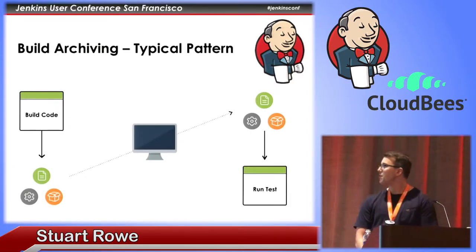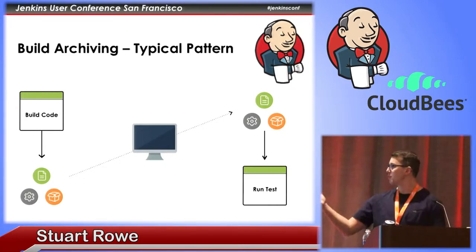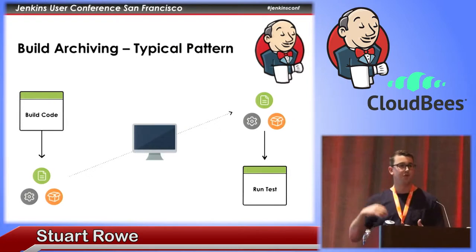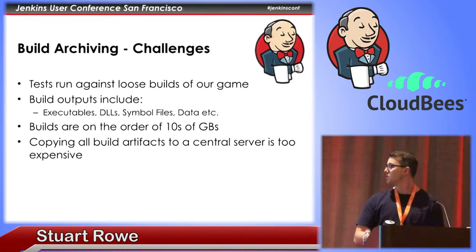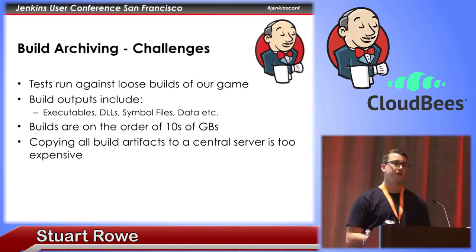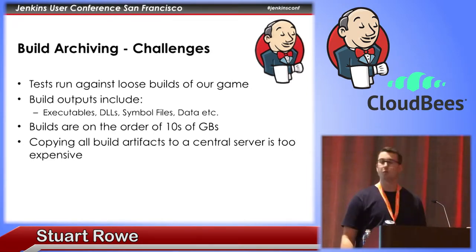In my experience with Jenkins, there is a typical workflow pattern for archiving builds where a build project produces some build output, that output is artifacted and archived on a master server, and then when a test project needs to consume that build output, it copies that artifact from the master into its own local workspace and then runs the test. The problem for FIFA is that our builds are quite big — on the order of 10 to 20 gigabytes each. Our big concern was how this copying directly to one server was going to affect our overall build and test times, as well as what's going to happen to the server bandwidth as we scale up our build farm with more machines all pushing their builds to one central server.